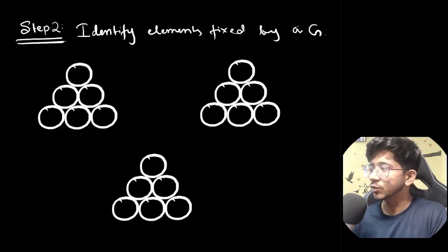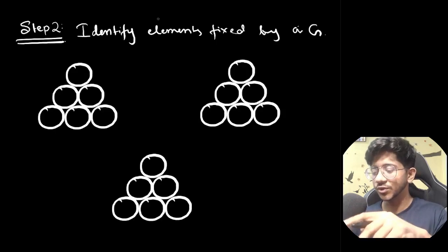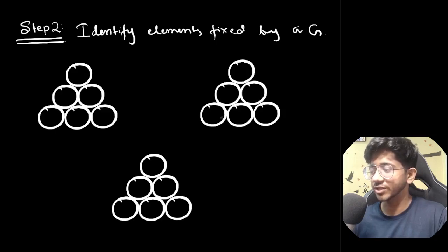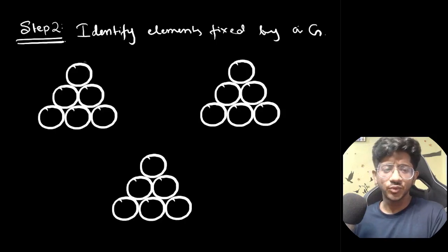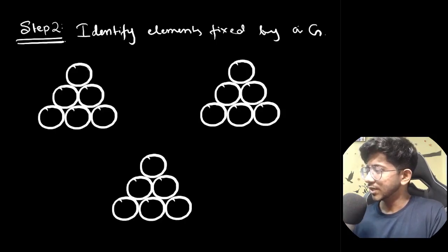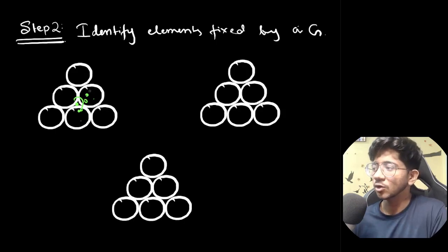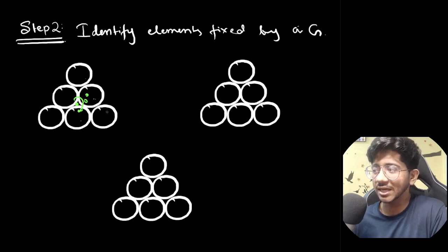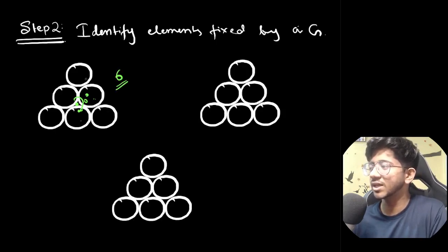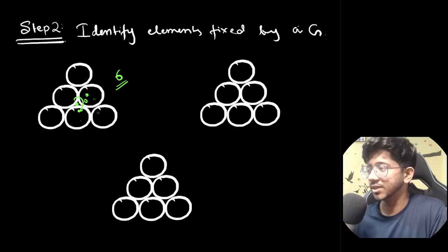Step two is to identify the elements fixed by each group operation. If we rotate by 0 degrees, nothing changes — every ball remains at its own place. So all six positions are distinct from each other with no superposition. This means all six different ball positions count independently, and there are six distinct elements in this case.